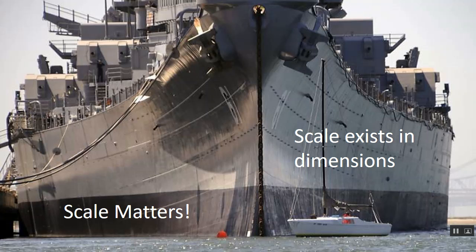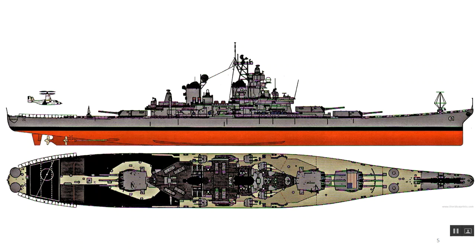I really like this picture. We're going to talk about dimension and scale — this is looking down the barrel of an Iowa-class battleship, and that little guy right there is a sailboat. That's a window of the sailboat. This is what it would look like right before you got run over by the battleship. Here's the side view just to remind you how big the guns are in the scale of this monster.